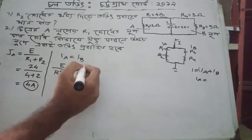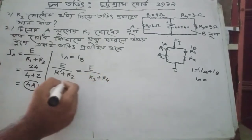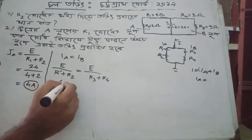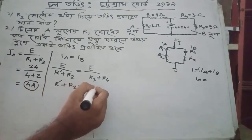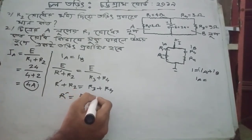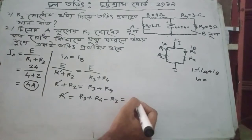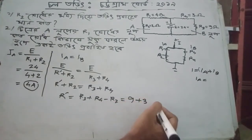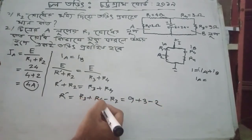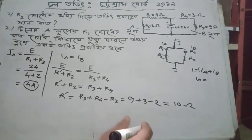R prime is equal to E by R3 plus R4. I will write R prime plus R2 equal to R3 plus R4. I will write R prime plus R3 plus R4 minus R2.